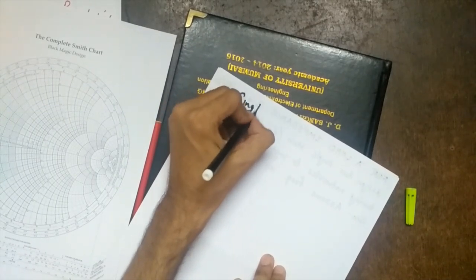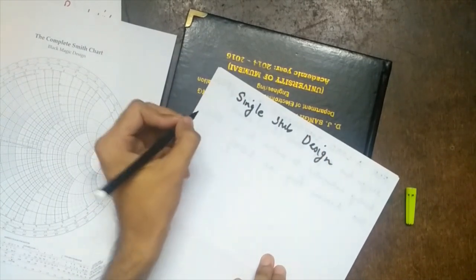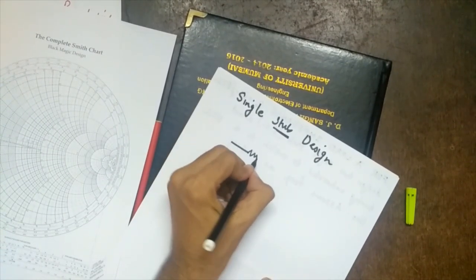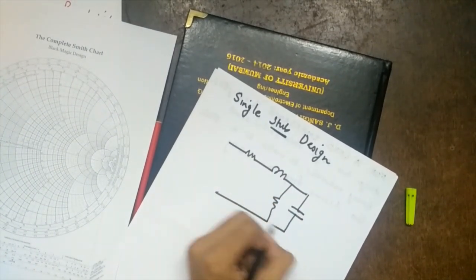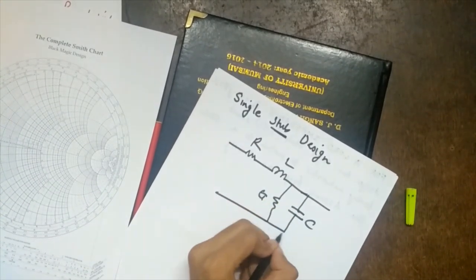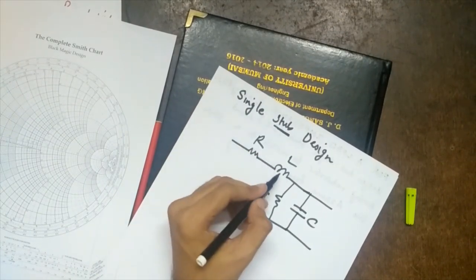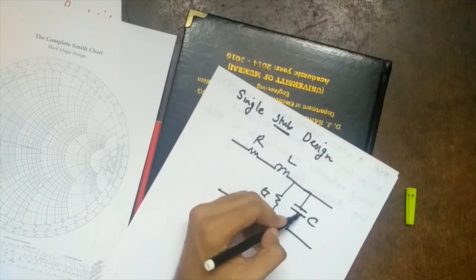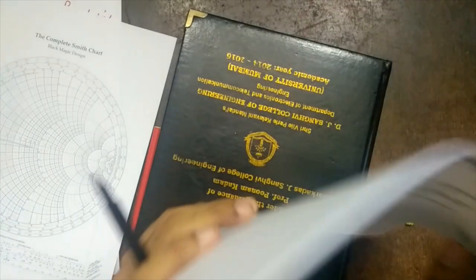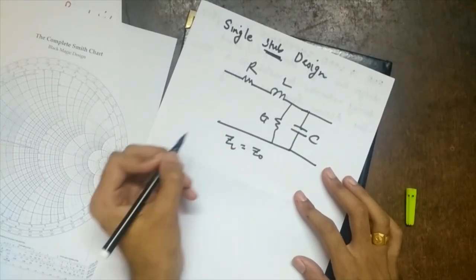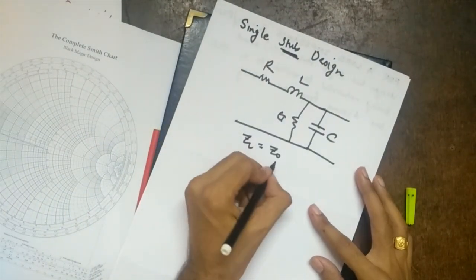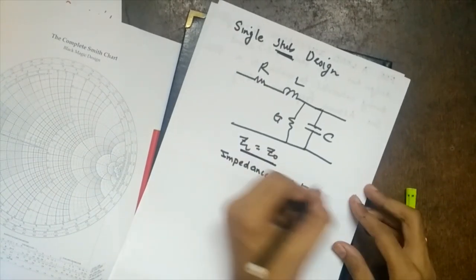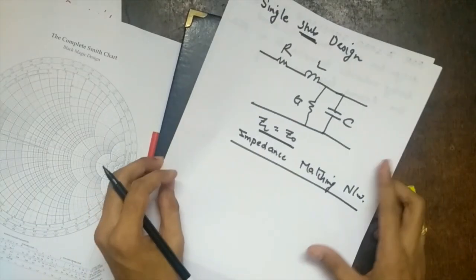The next topic is single stub design. A stub is a section of transmission line. A transmission line is modeled as an RLGC equivalent circuit. Depending on our design, we can keep other values zero and have it as just an inductor or just a capacitor. We require single stub design because we need ZL equal to Z-naught, which usually won't be the case. We have to design a network to achieve that — called an impedance matching network.